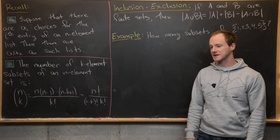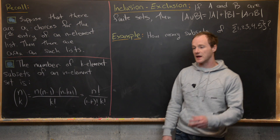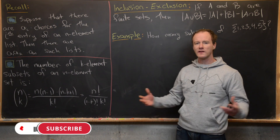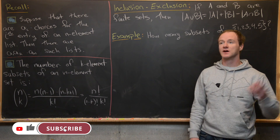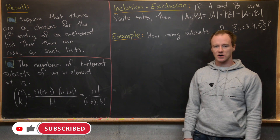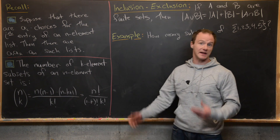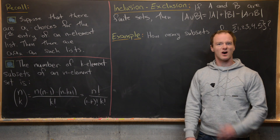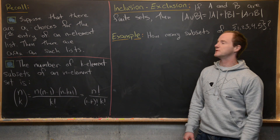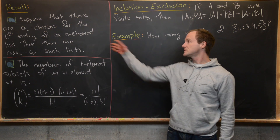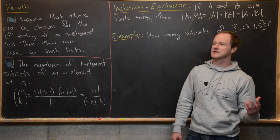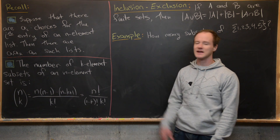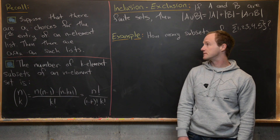This is a video to support a course on an introduction to proof writing. This is one last video about counting before we start talking about proof writing in the next video. I want to recall a couple of things we did last time: first, counting the number of possible lists subject to certain conditions, and second, the number of subsets.